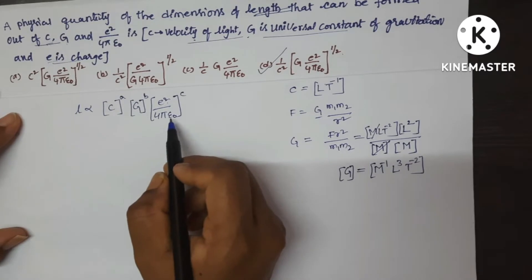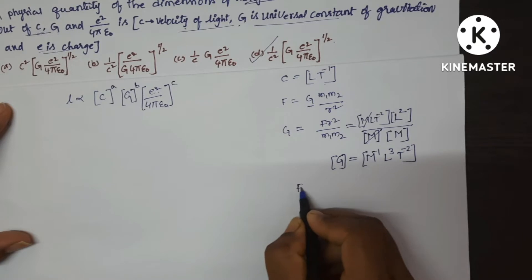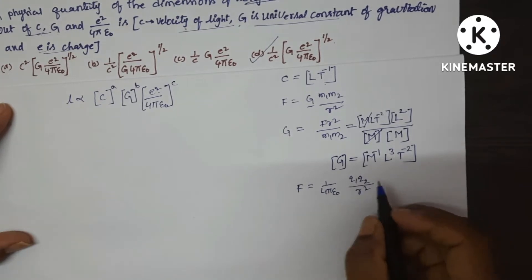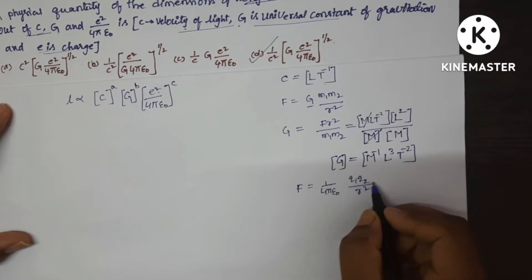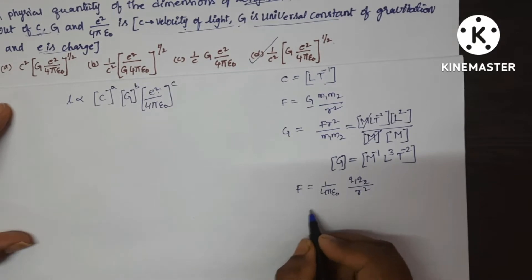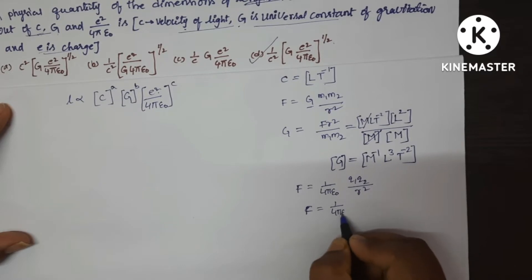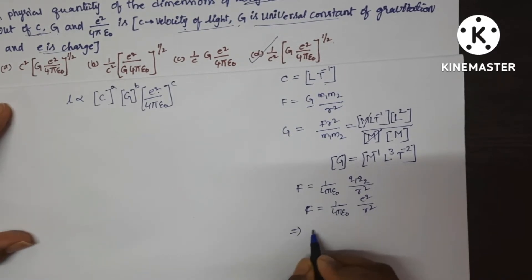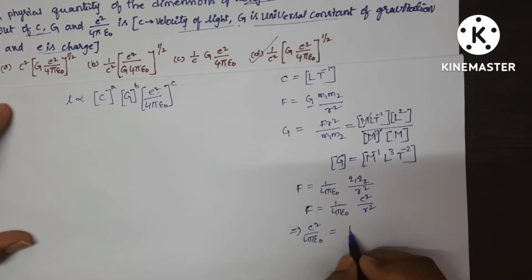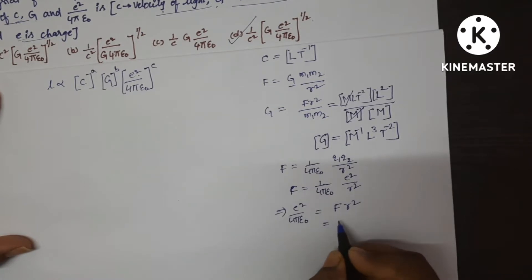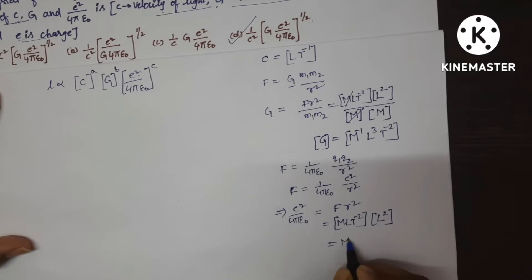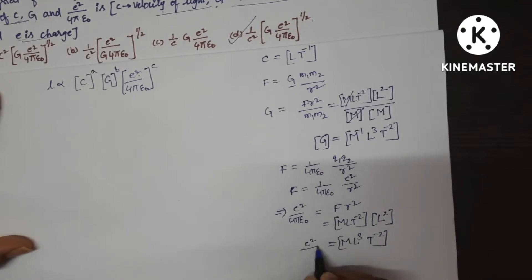Now find the dimensions of E²/4πε₀. Write the electromagnetic force formula: F = (1/4πε₀)·Q₁Q₂/R². Considering E instead of Q₁Q₂, we get F = (1/4πε₀)·E²/R², so E²/4πε₀ = F·R². The dimensions of force are M L T⁻² and R² is L², giving M L³ T⁻². This is the dimensional formula for E²/4πε₀.